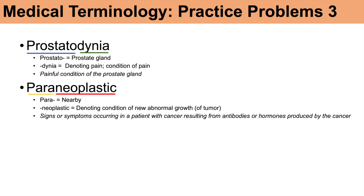So what does paraneoplastic really mean? We hear of paraneoplastic syndromes — signs or symptoms occurring in a patient with cancer resulting from antibodies or hormones produced by the cancer, by the tumor, that cause symptoms in the patient. It's essentially nearby the tumor, but it's really an odd one to break down. Paraneoplastic really means signs or symptoms in a cancer patient resulting from antibodies or hormones produced by the cancer.